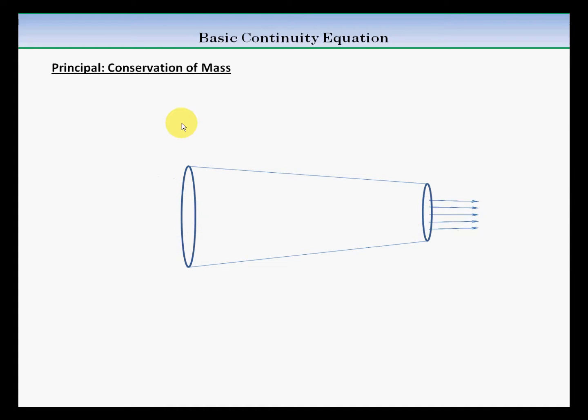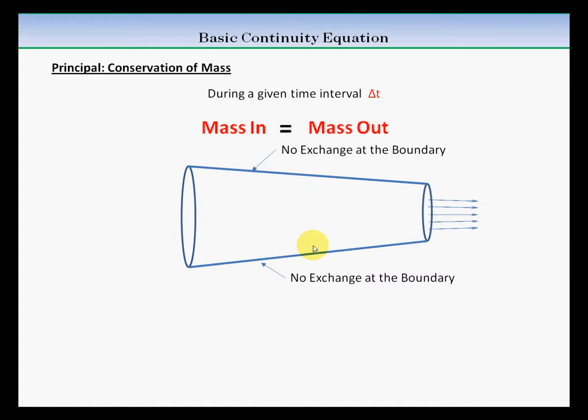Continuity equation is based on the principle of conservation of mass. For example, for a given pipe, the amount of mass entering during a time interval delta t is same as the amount of mass leaving the system during that time. There is an assumption that there is no exchange going on at the boundaries.